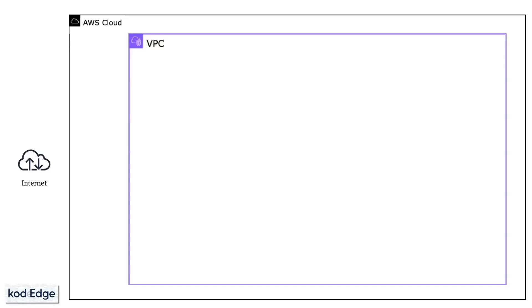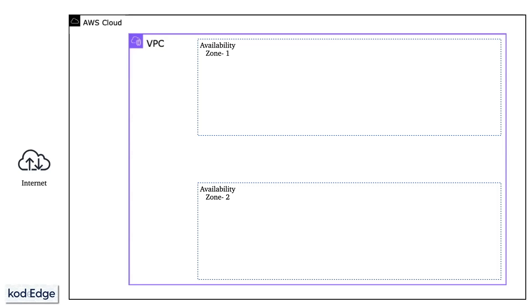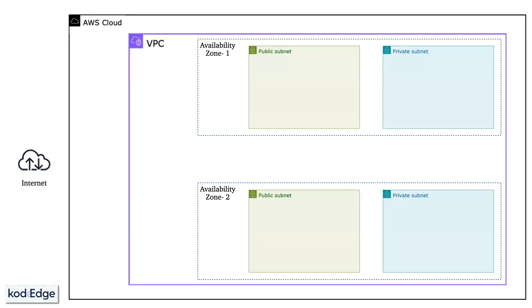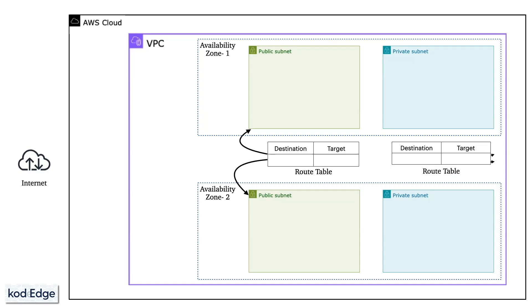In the AWS cloud we will first create a VPC, and in the VPC we will use two availability zones. In each AZ we will deploy a private subnet and a public subnet, so at the end we will have two private subnets and two public subnets. Then we will create routing tables associated with the public subnets and another routing table for the private subnets. After that we will create an internet gateway and a NAT gateway in the public subnet.